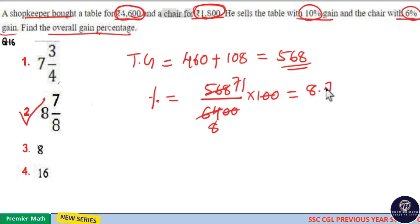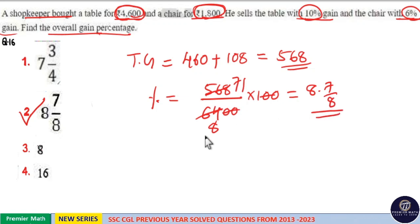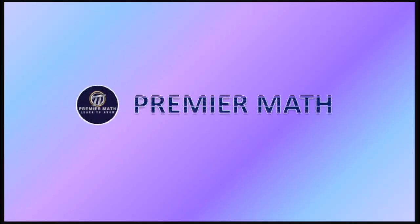This is 8 7/8. 71 by 8 is 8 7/8. So, option 2 is your answer.